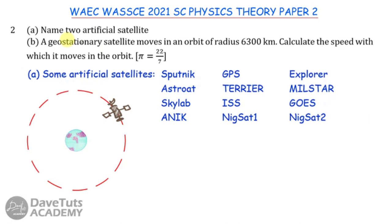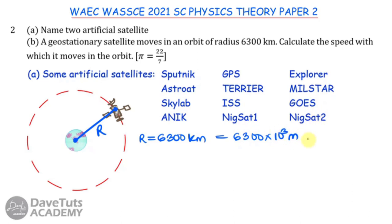In the second part, a geostationary satellite moves in an orbit of radius 6,300 kilometers. The radius R = 6,300 km = 6,300 × 10³ meters. Pi is given as 22/7. Since a geostationary satellite completes one orbit in 24 hours, the period T = 24 × 60 × 60 seconds.